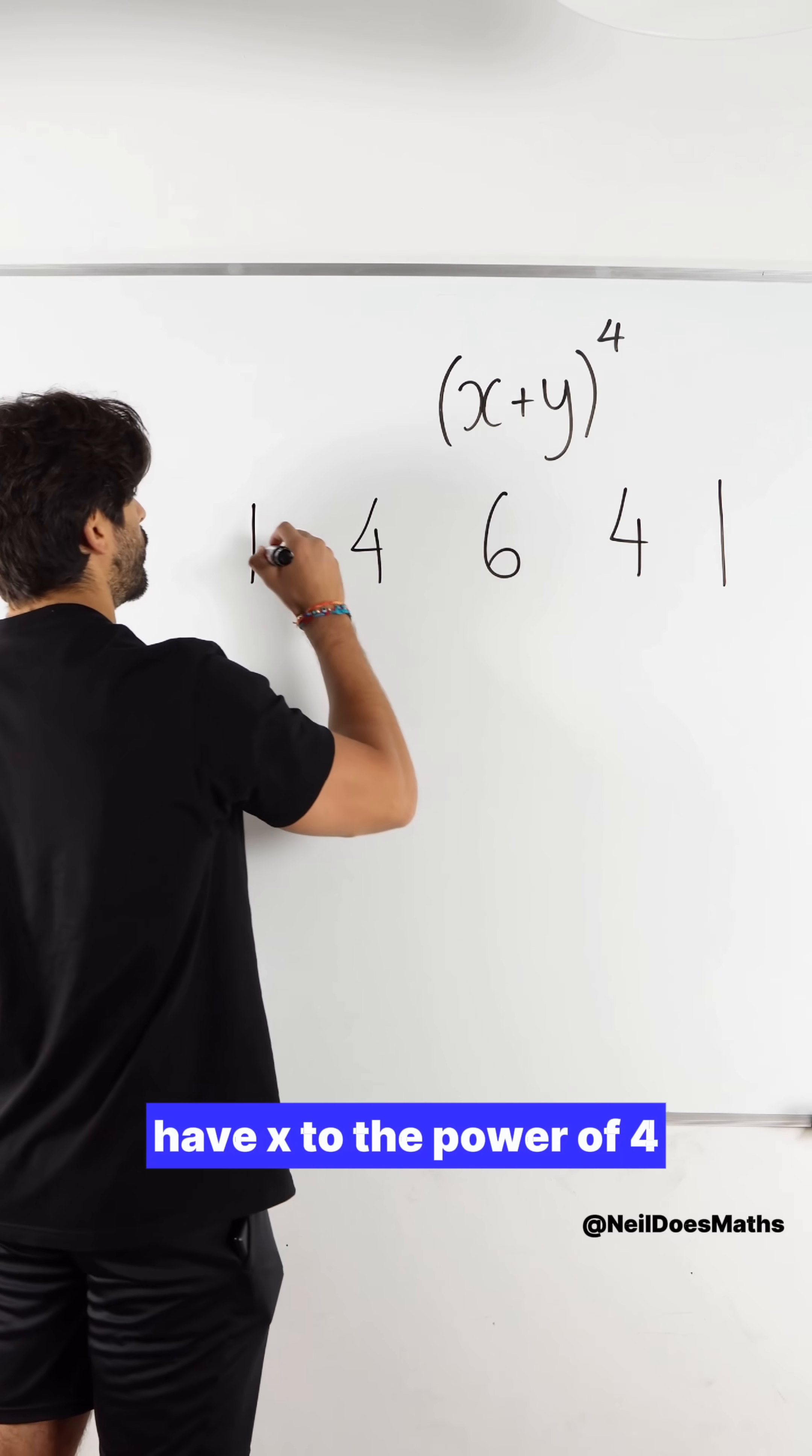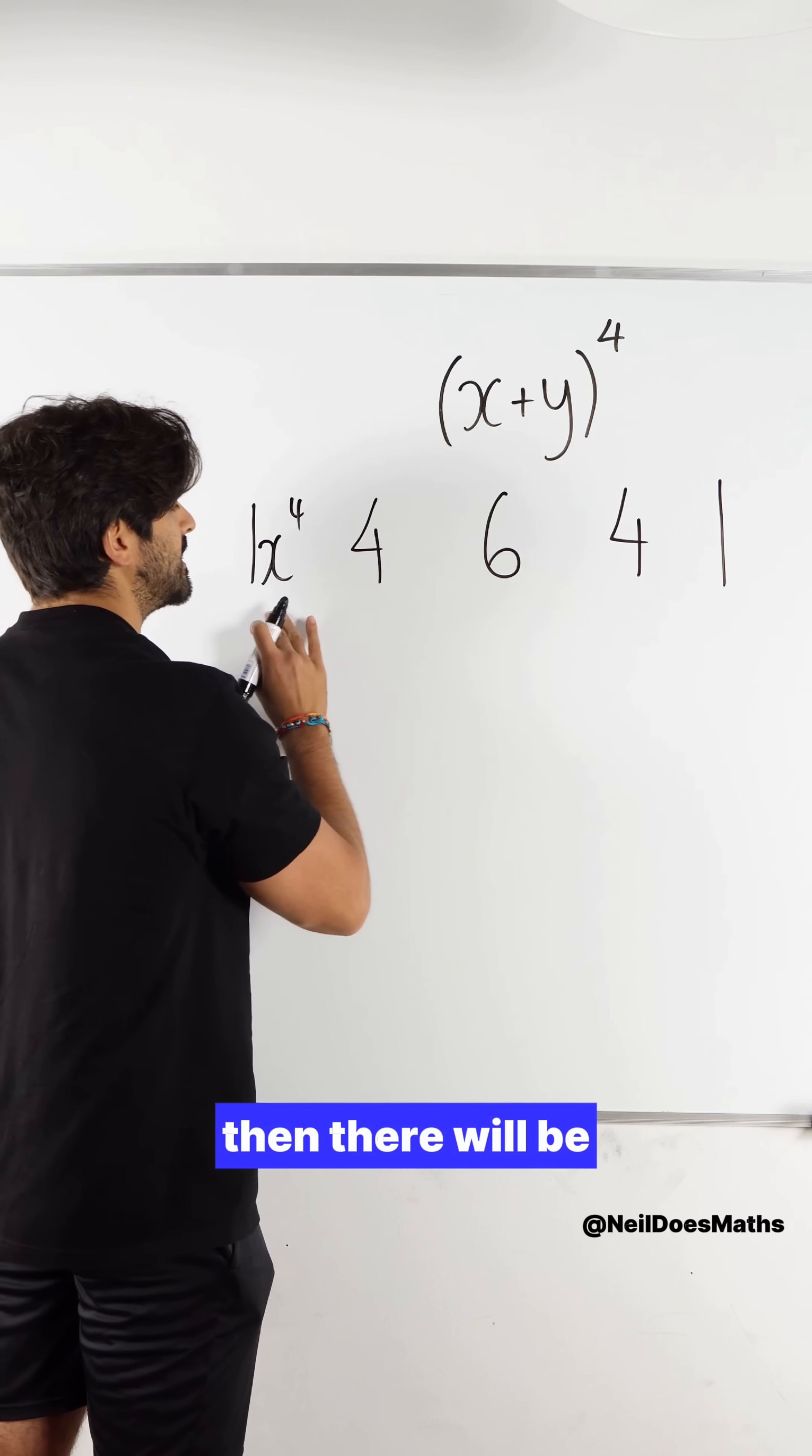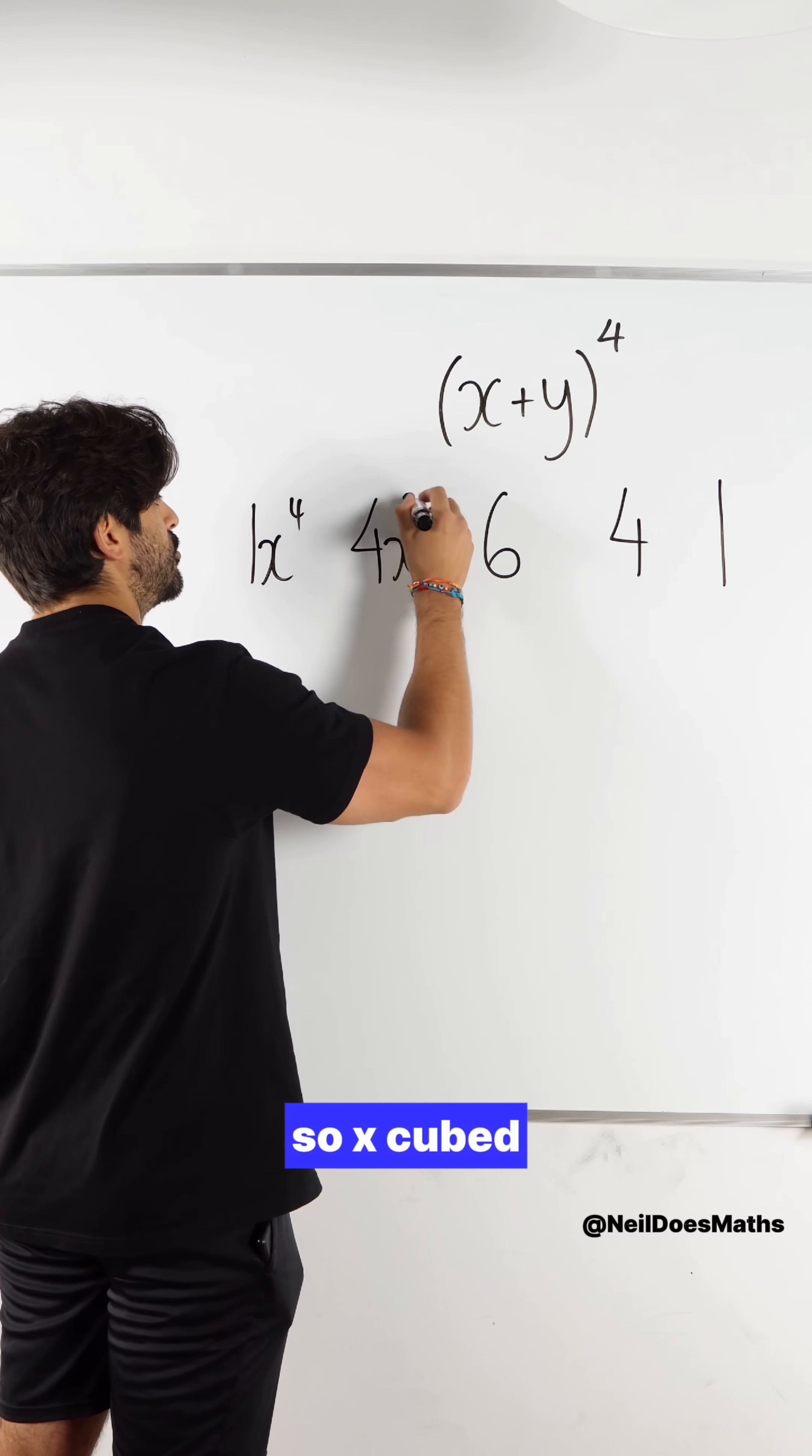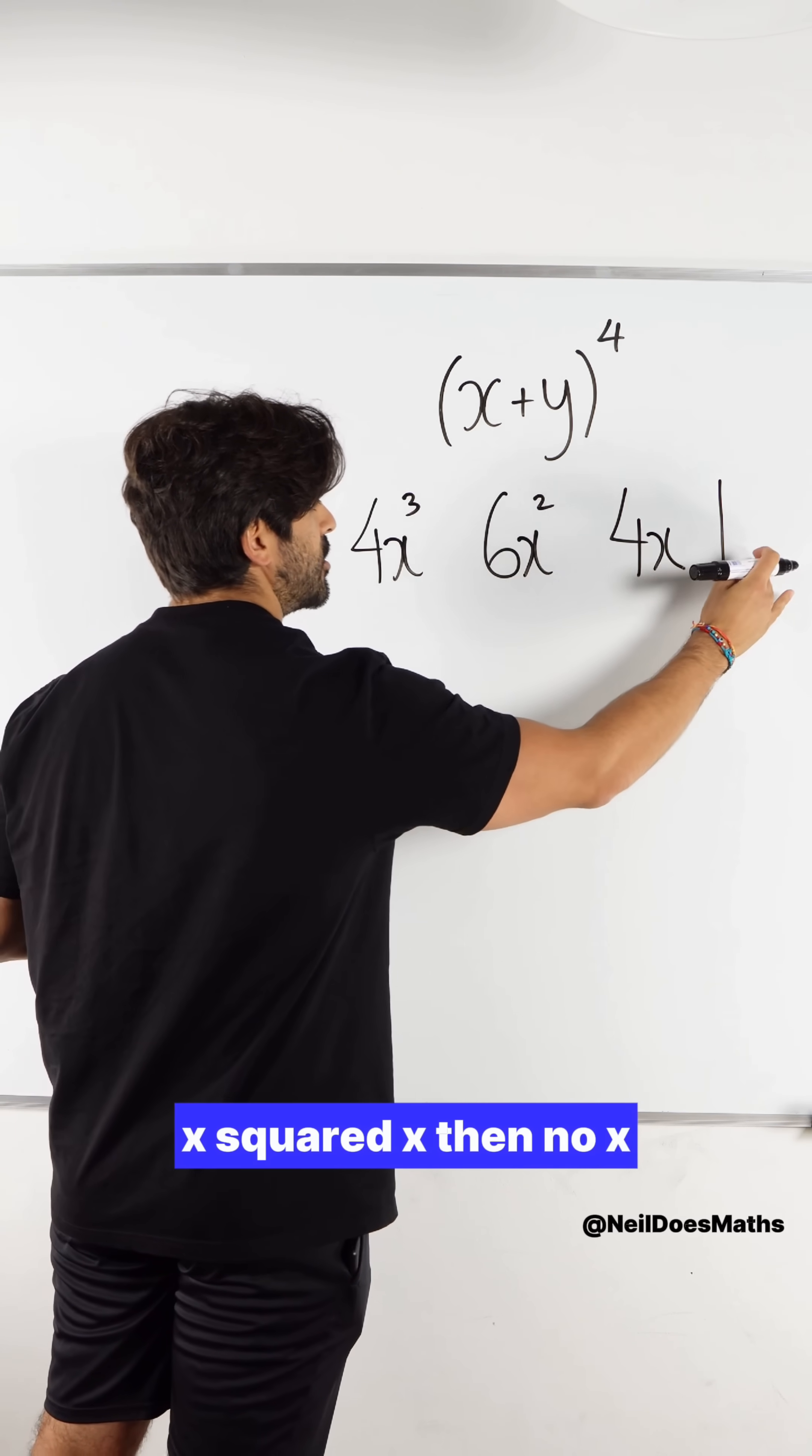And then we would have x to the power of 4, then decreasing in power. So x cubed, x squared, x, then no x.